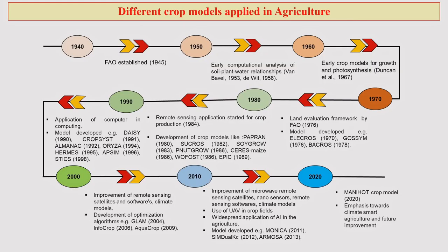Let us now look at different crop models that have been applied in agriculture over the last almost 60 to 70 years. If you look at the history or chronology of the development of crop models in agriculture, you will see that one of the significant initiations of these modeling exercises started in 1940. In 1945, the Food and Agricultural Organization was established. By 1950, the early computational analysis of soil, plant, and water relationships came into picture. The famous Van Webel and De Witt were pioneers of this computational analysis.